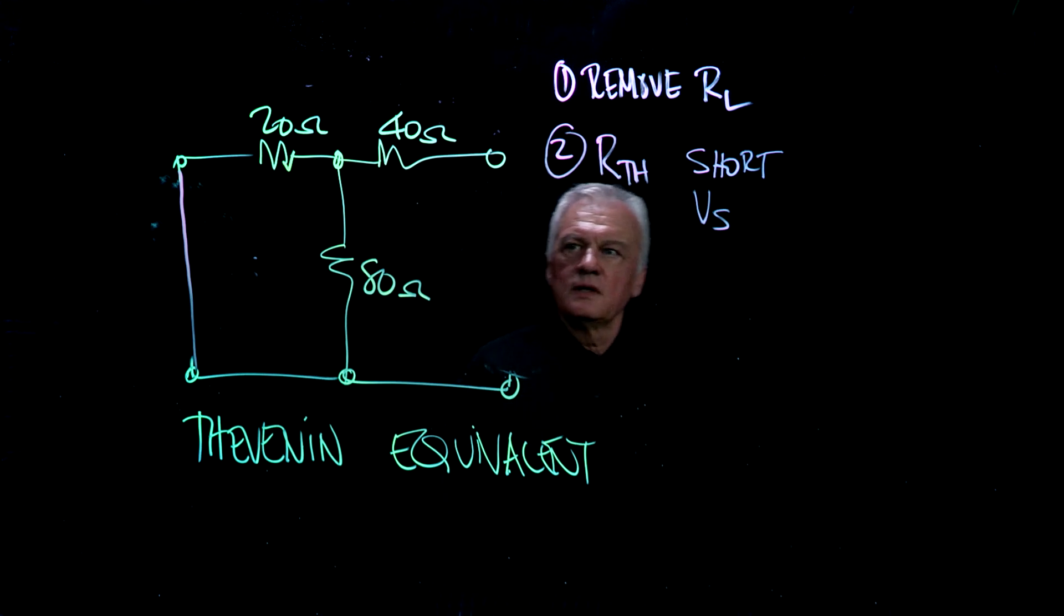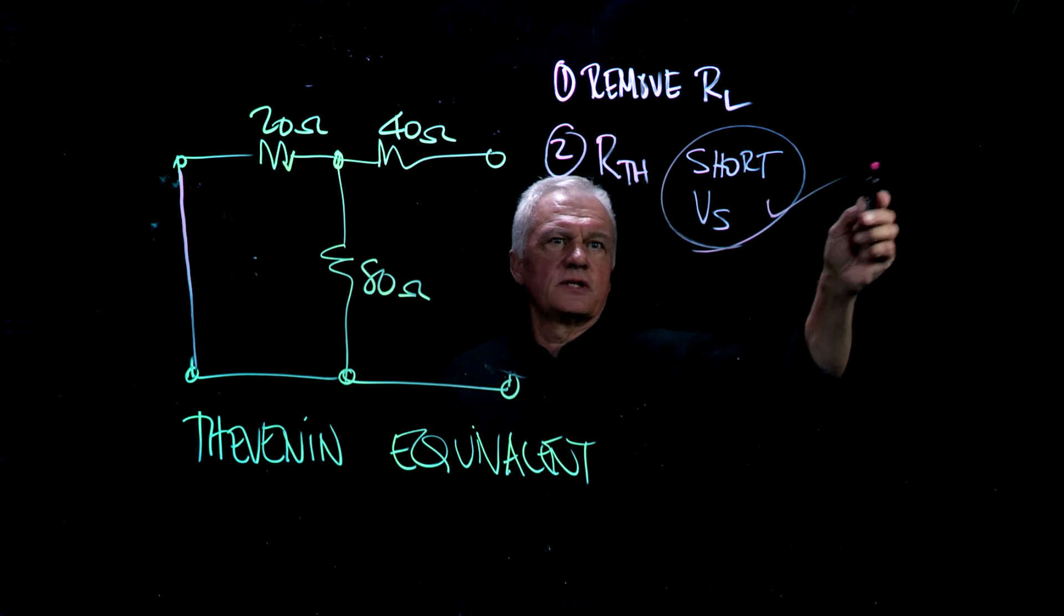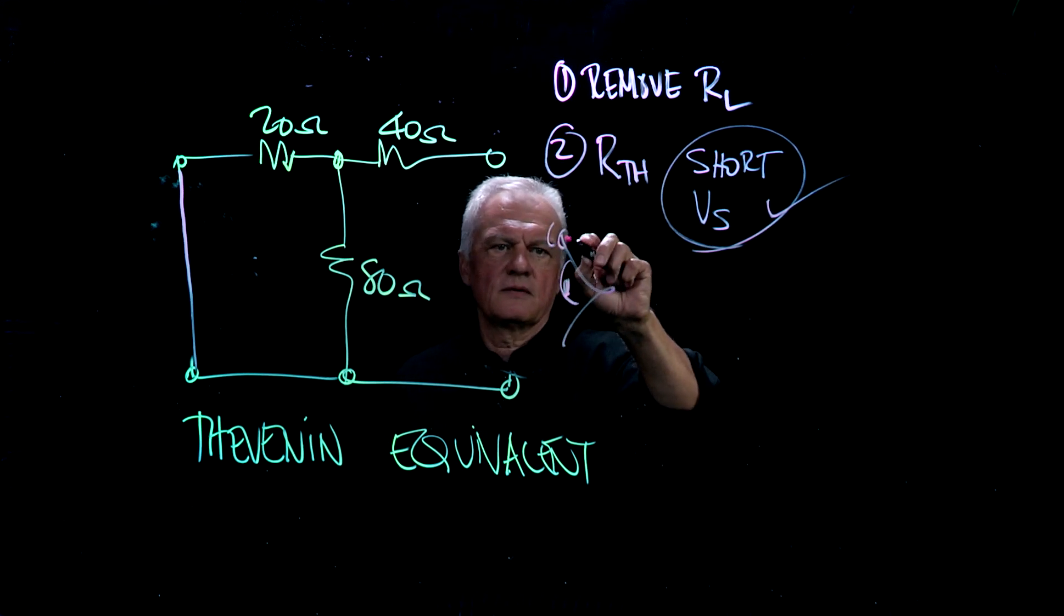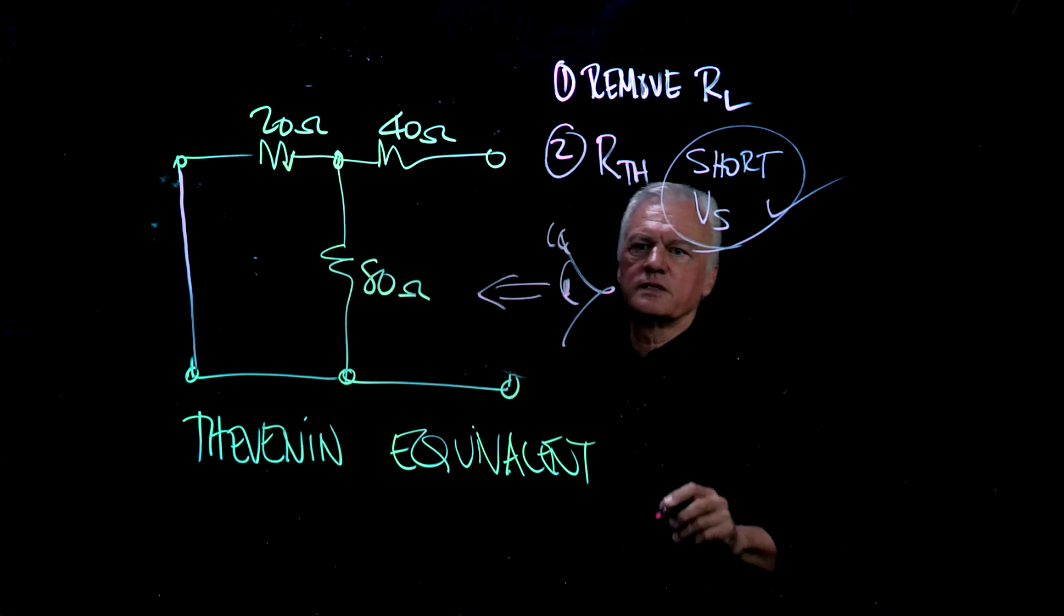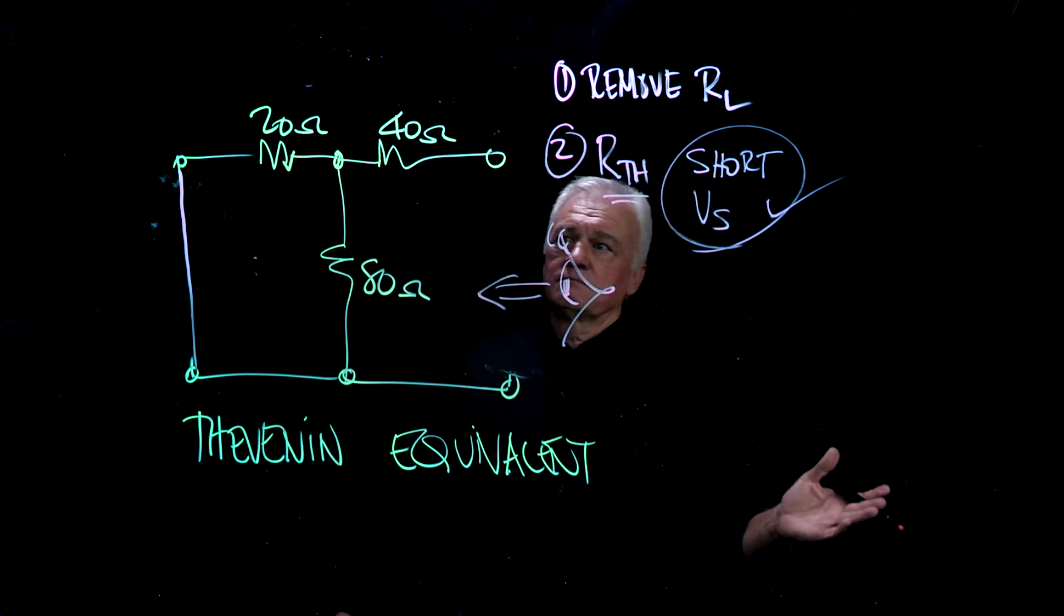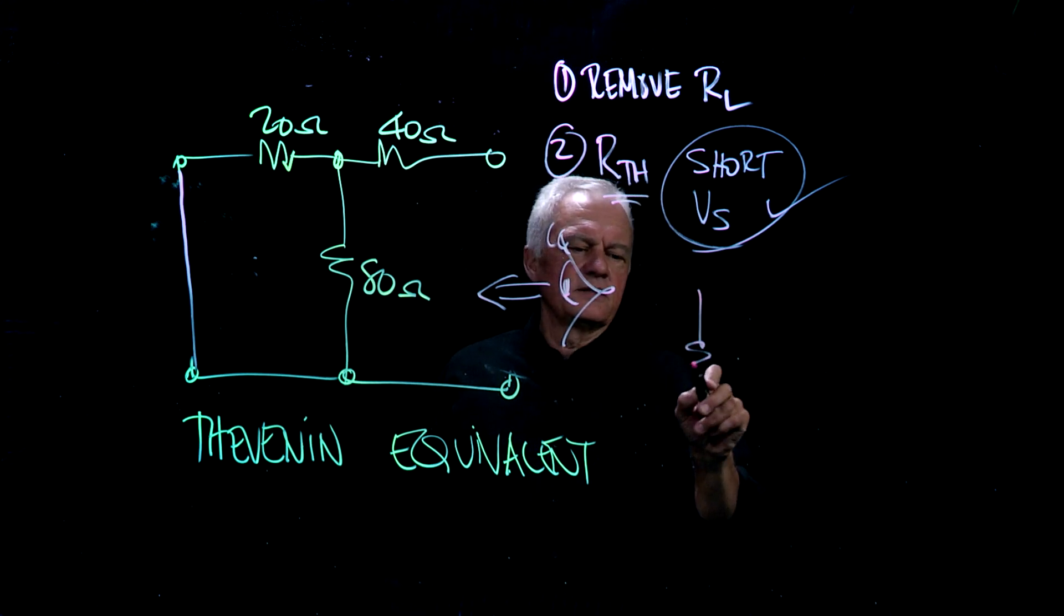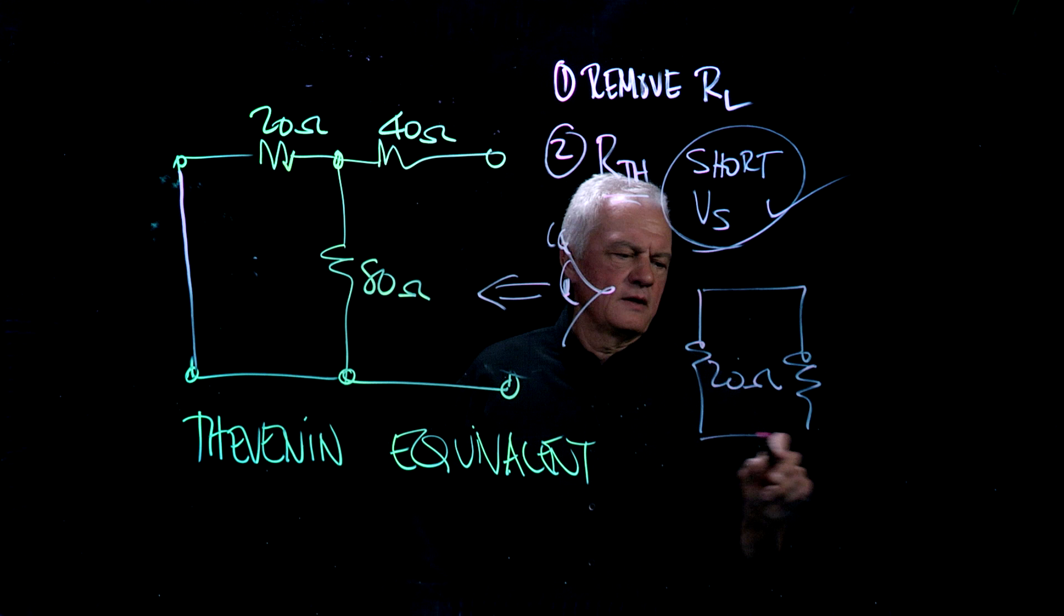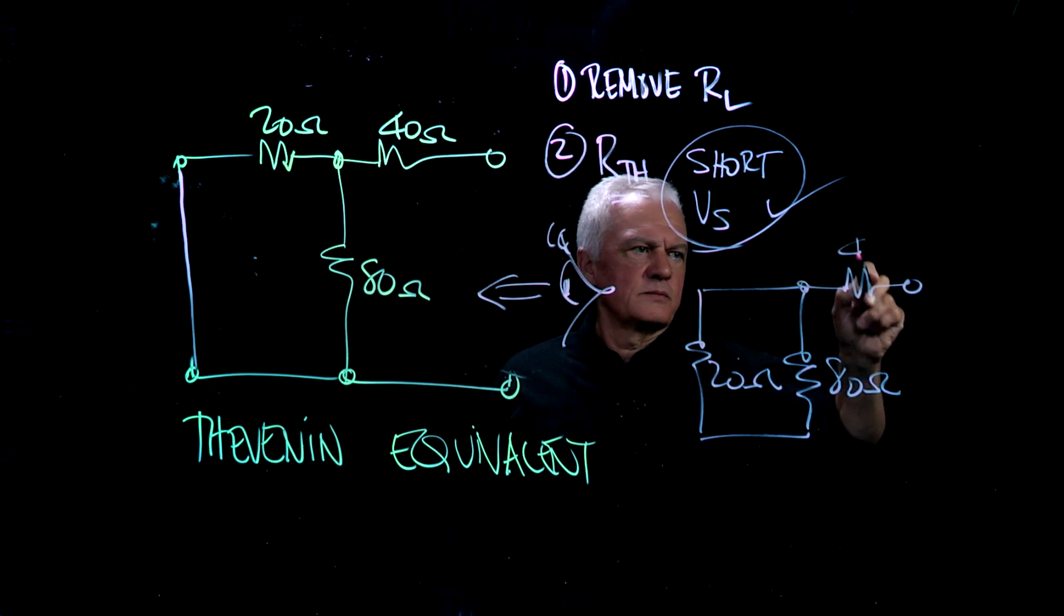So now that I've done this, that's shorted, what we do is take our eyeball and look into the circuit, and now what I want to do is see what's going on here. So our friend, series and parallel circuits. What we have here is 20 ohms in parallel with 80 ohms in series with 40 ohms.